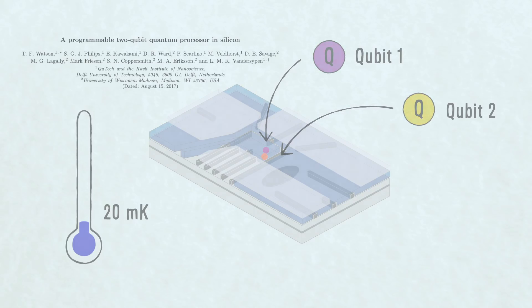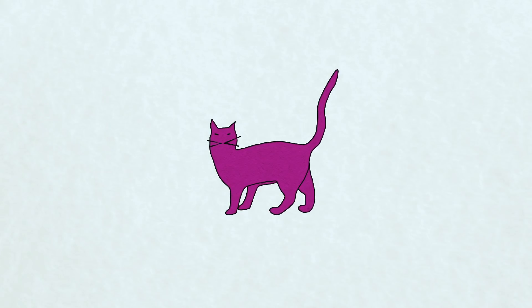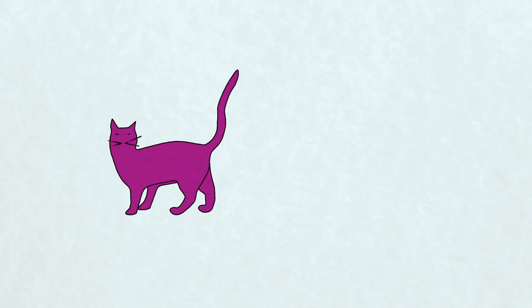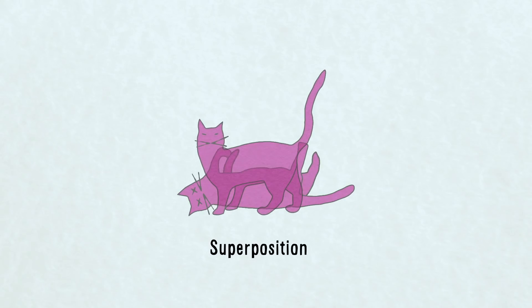A quantum bit is a quantum mechanical system that can be in two states at once. A famous example is Schrödinger's cat, which can, strangely, be in a superposition of dead and alive. However, cats are very impractical for this purpose, and we use electrons for our qubits.